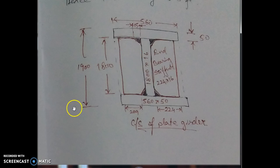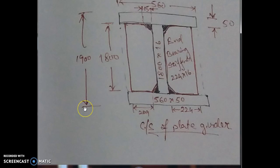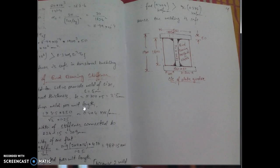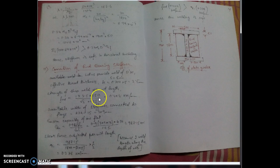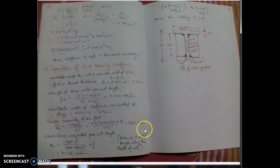This completes the design of the plate girder. The final cross-section diagram shows the dimensions of the flange and web, with the end bearing stiffener having four coped corners each of 15mm length. Note that two items are being omitted here: the design of the intermediate transverse stiffener and the design of the end panel.